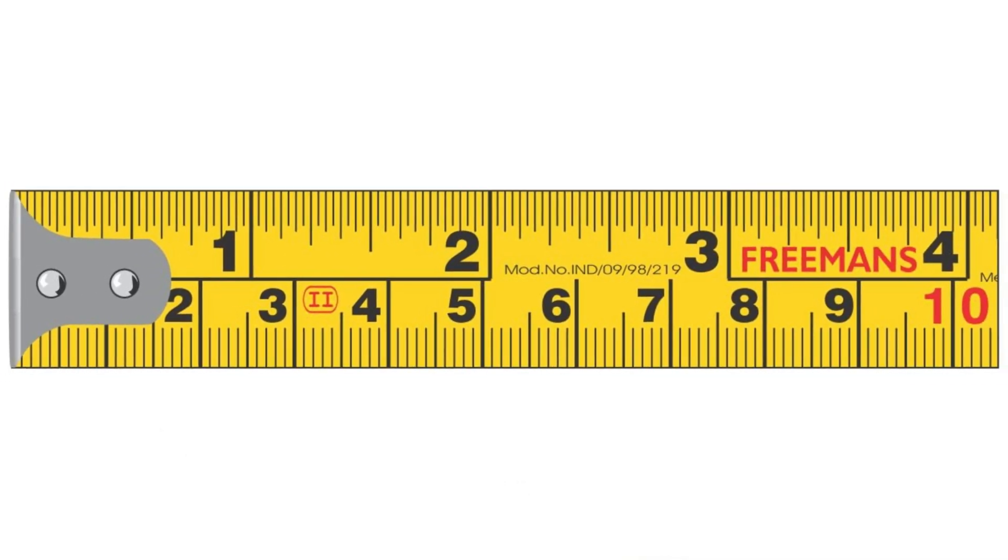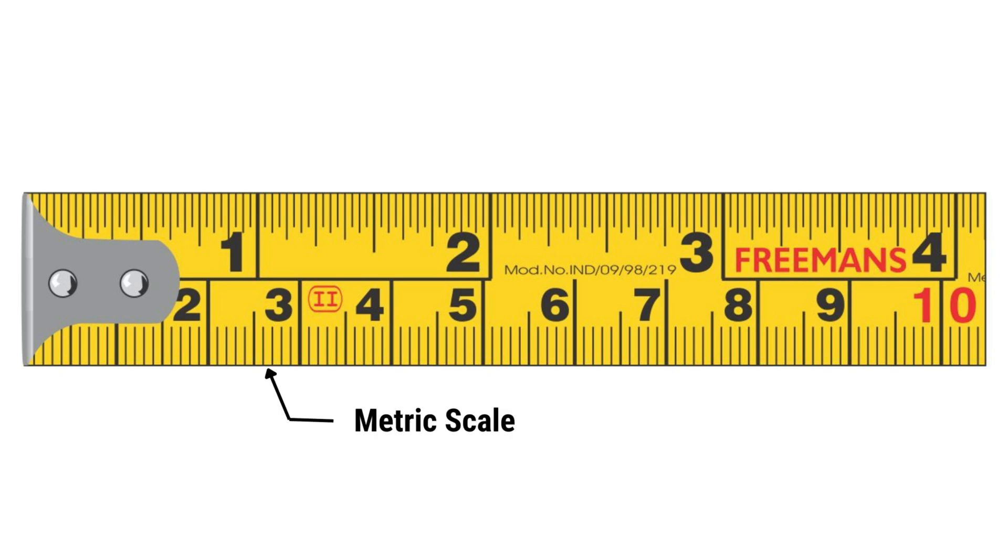Now let's look at the scales. The bottom half shows the metric scale with measurements in centimeters and millimeters. The top half has an imperial scale for inches. The measurements start from the zero point, marked right at the edge of the hook.